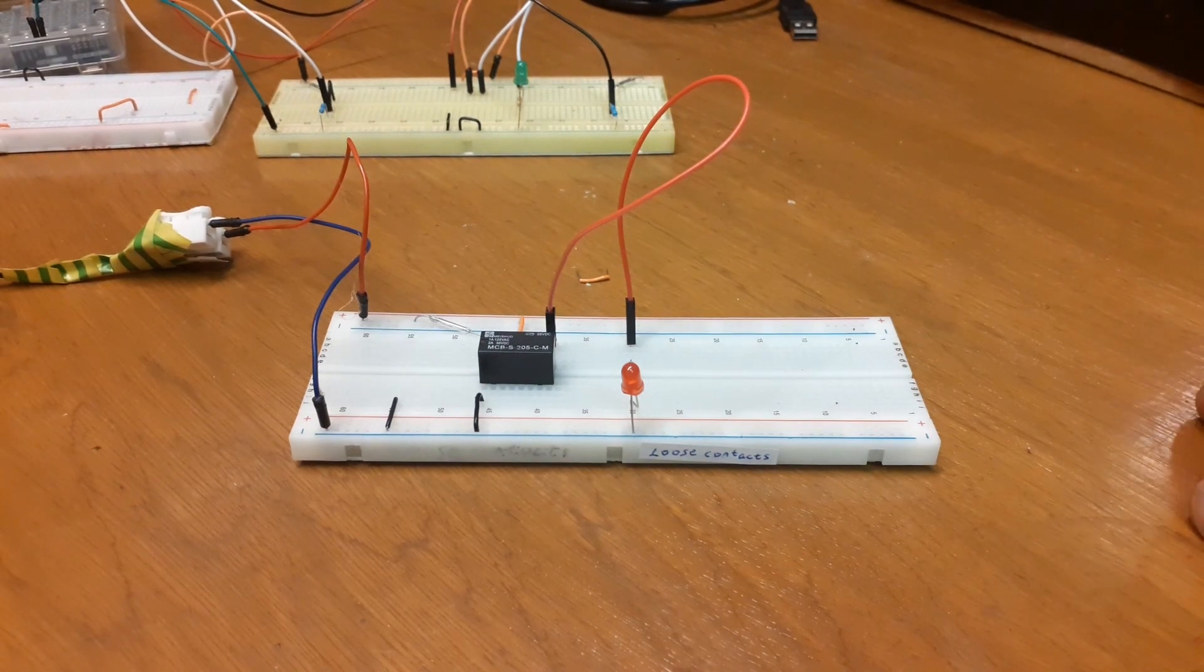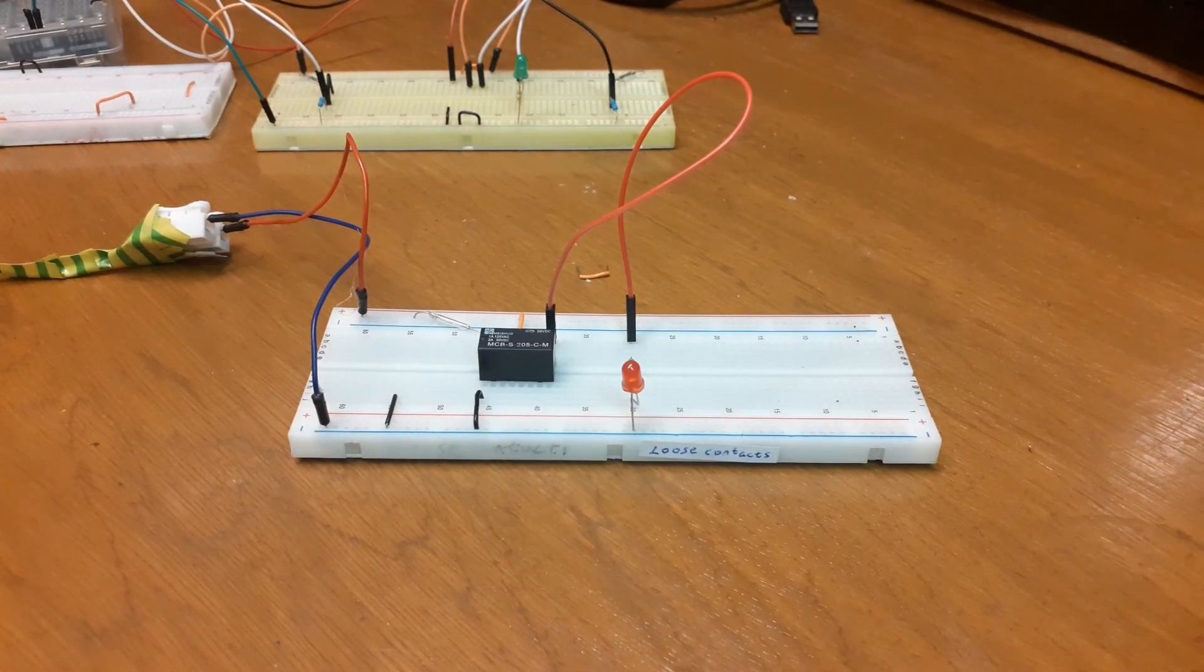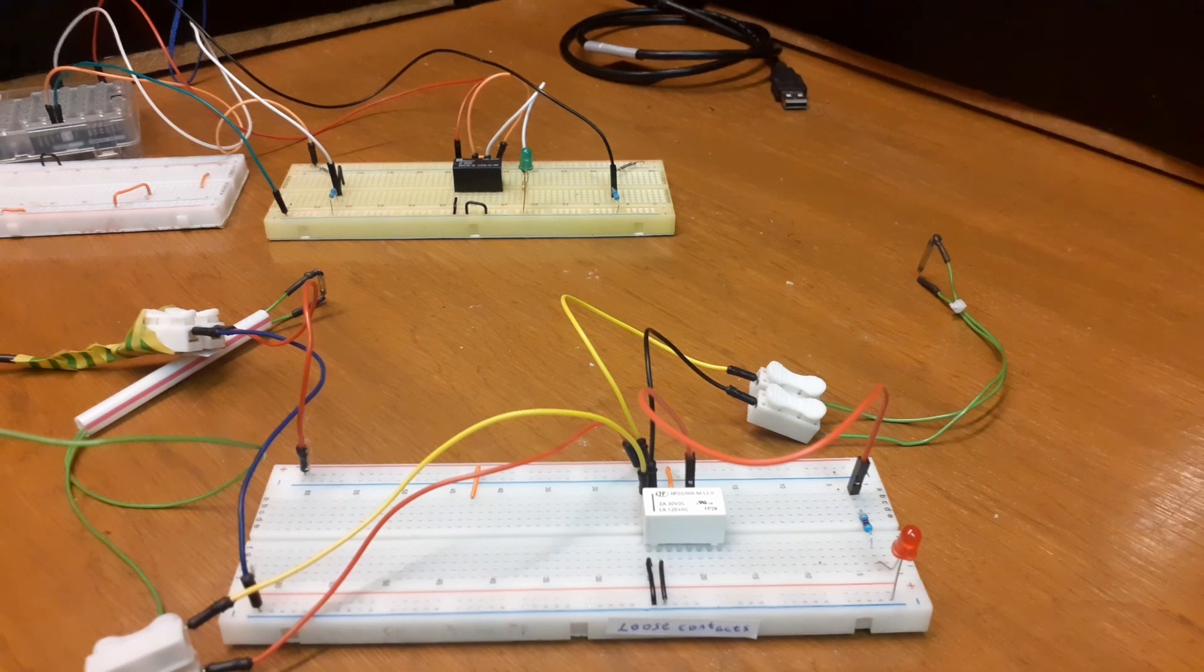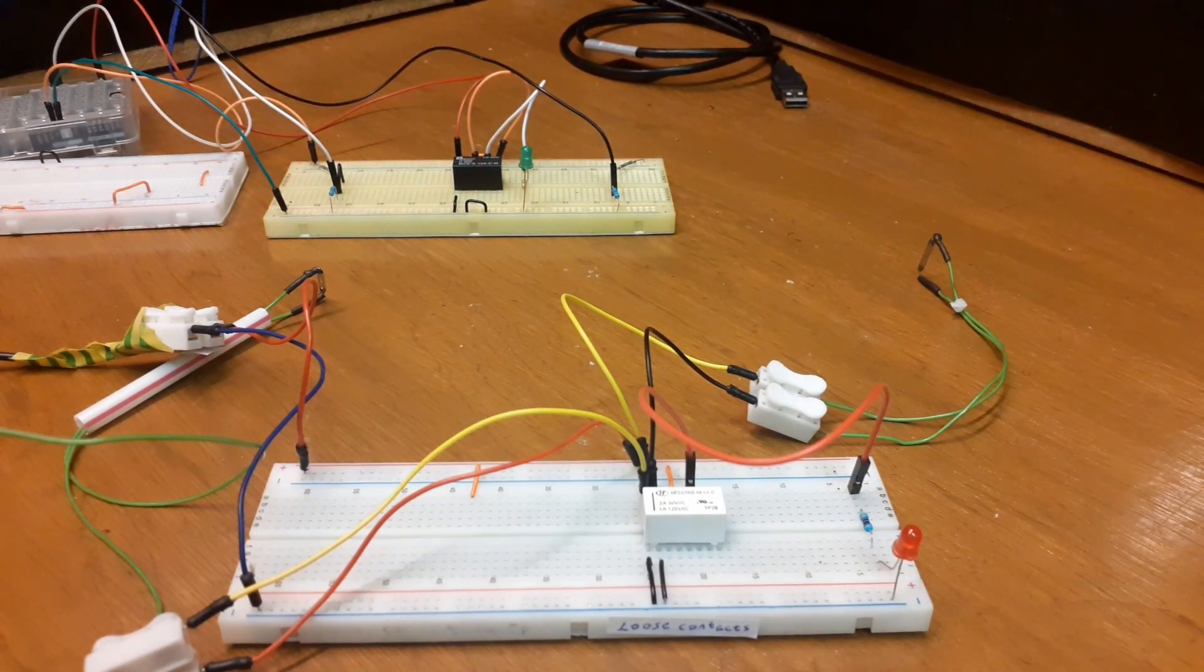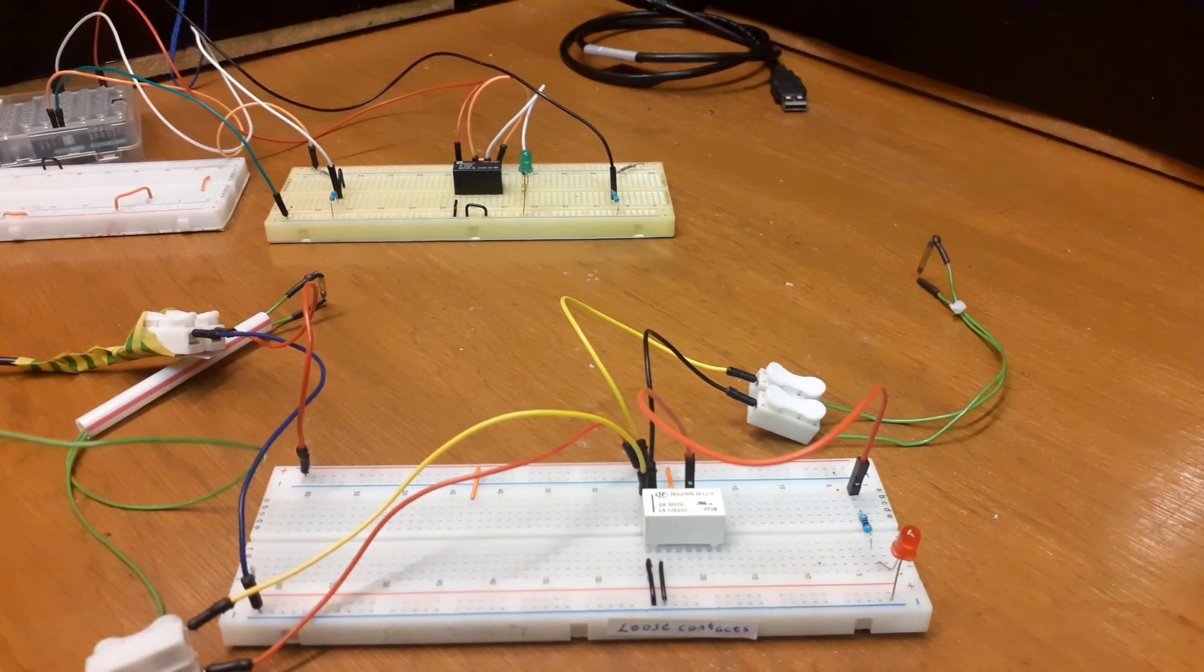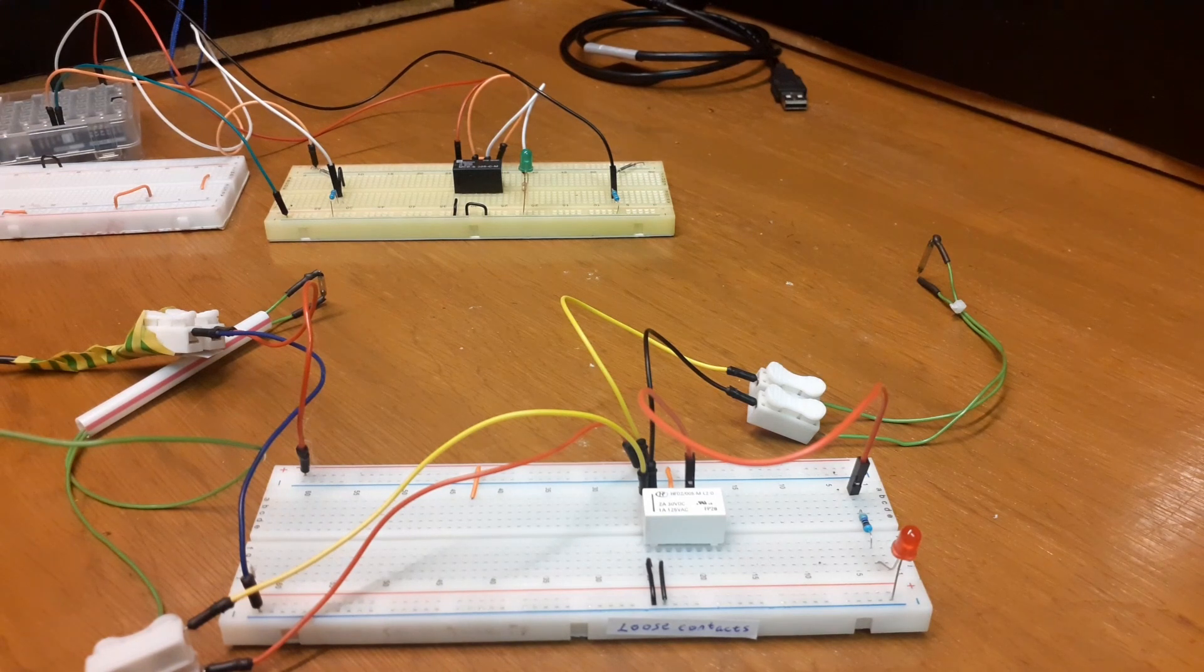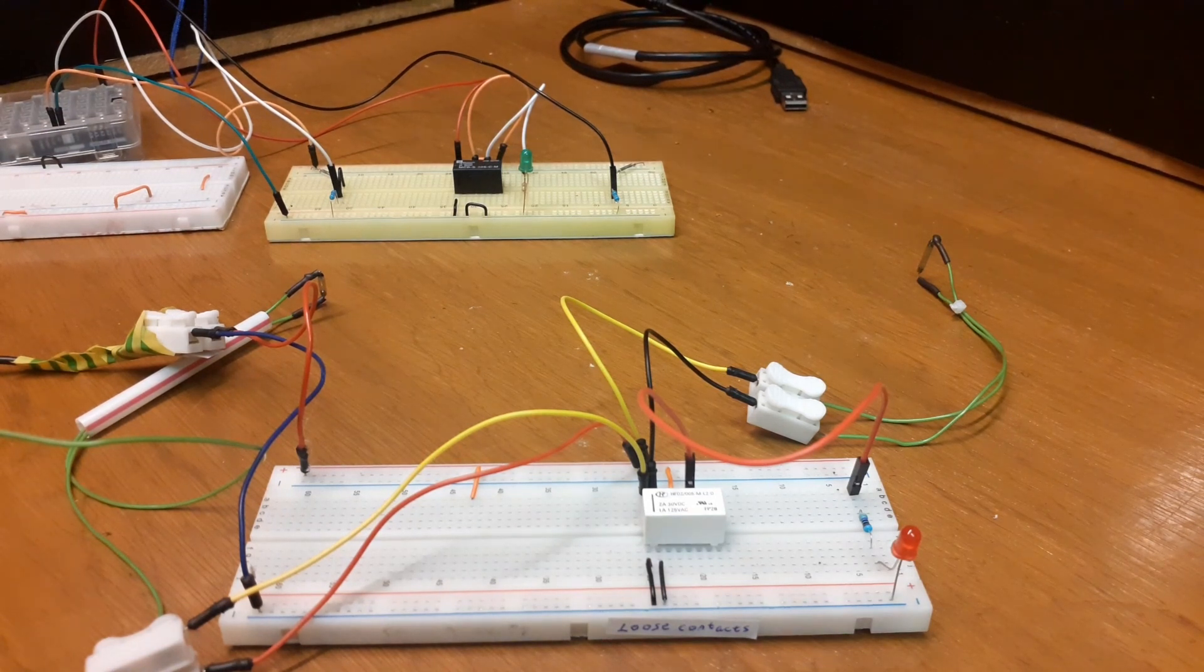So if you want to turn something on and it stays on with reed switches, we're going to use two reed switches. For example, I wanted to turn on a motor and have it stay on until something happened. Could be some kind of conveyor system.